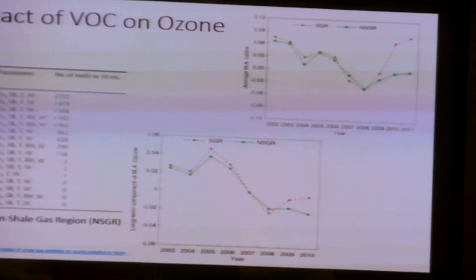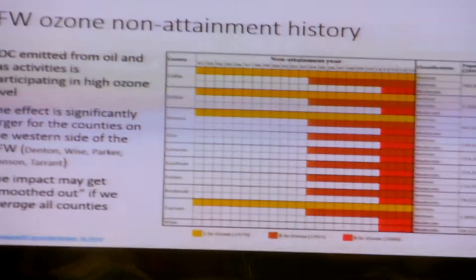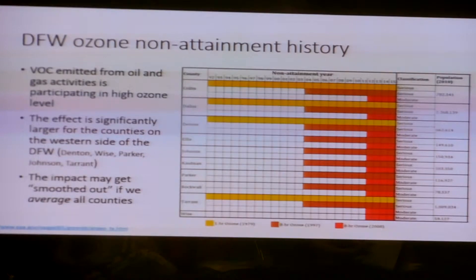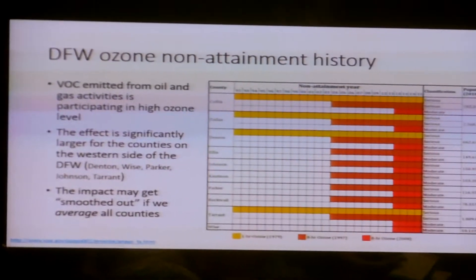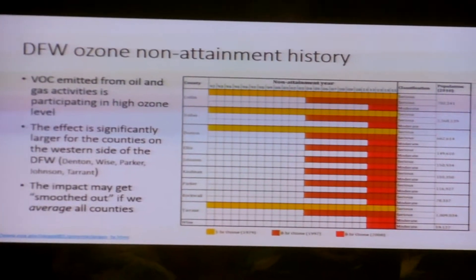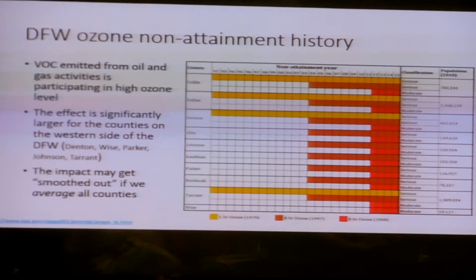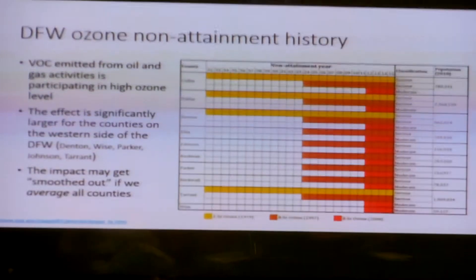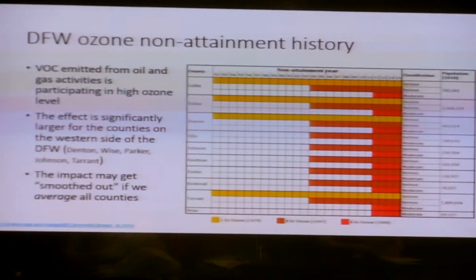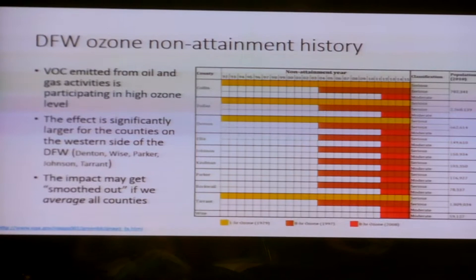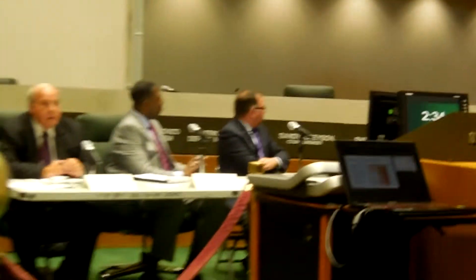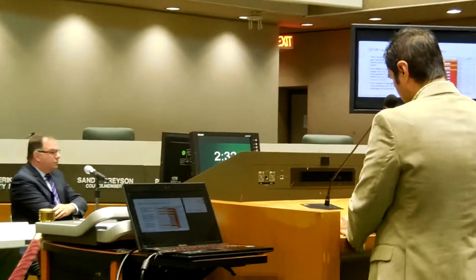This increase may be explained by VOC emissions from oil and gas operations. This table shows a really disappointing history of ozone attainment in the DFW area. Given this, I recommend that the state needs to go beyond the traditional approaches to control ozone and adopt new and more stringent strategies targeting oil and gas industries and facilities.